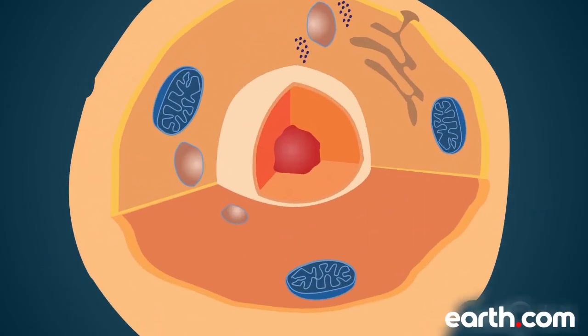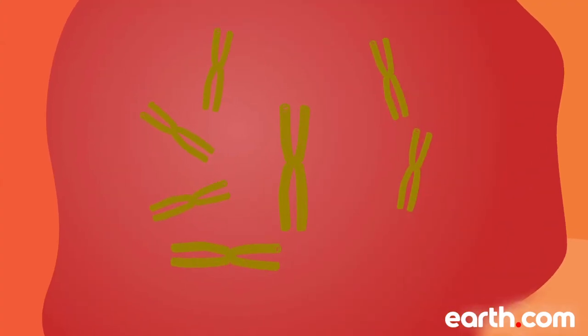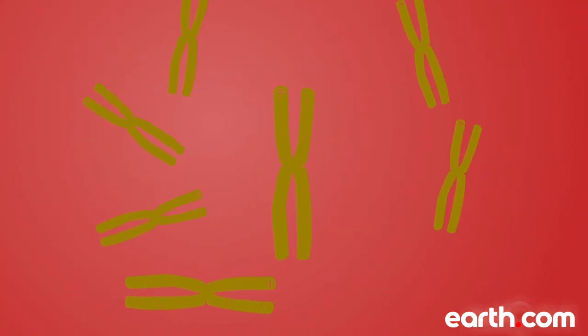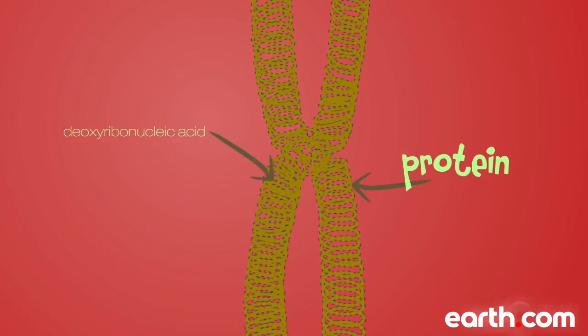Now let's explore chromosomes. Chromosomes are thread-like structures located inside the nucleus of animal and plant cells. Each chromosome is made of protein and a single molecule of deoxyribonucleic acid, or DNA.